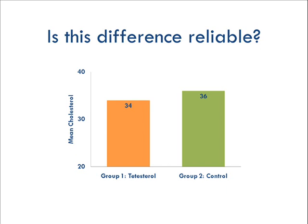Descriptively, these two means are different. But does the drug actually work, or was this just chance? Would a similar result happen again with a new sample? That's why we need inferential and not just descriptive stats. The t-test will tell us how likely this difference is to be reliable, or whether it's just due to chance.